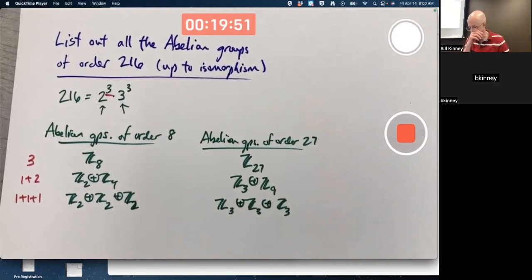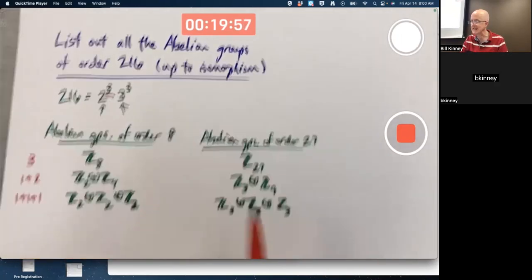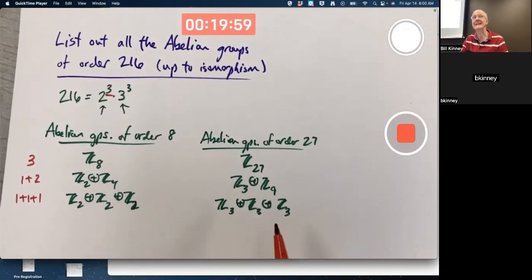Now, like I said, combine all these possibilities to get all the possibilities of abelian groups of order 216. There's going to be 3 times 3, 9 of them.